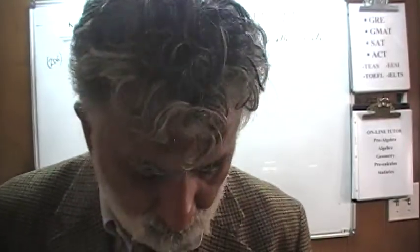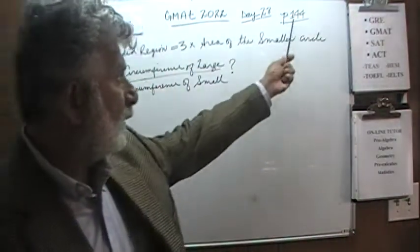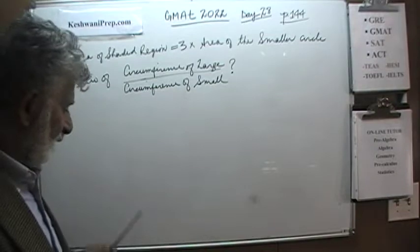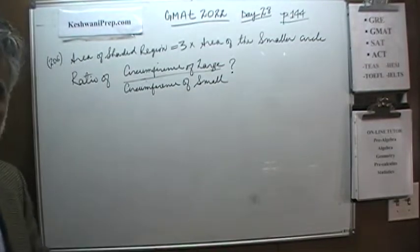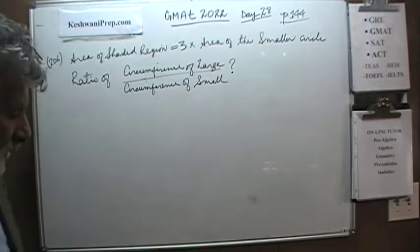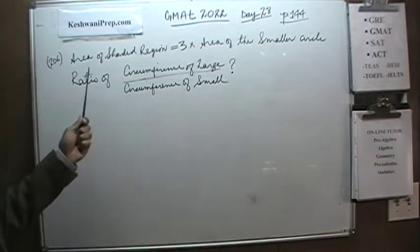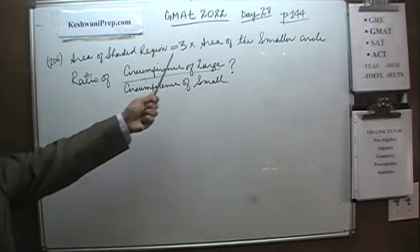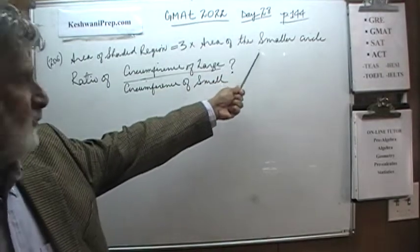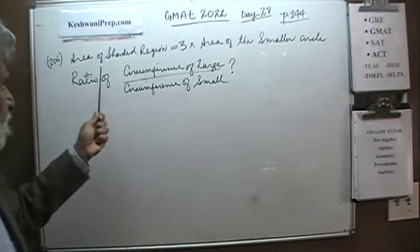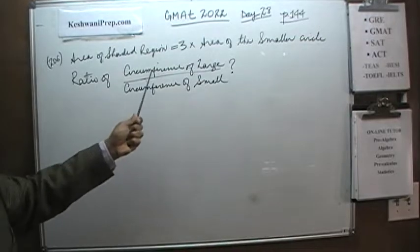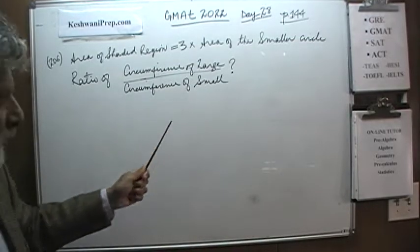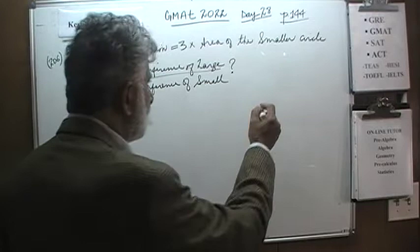Today we'll solve some problems that you'll find on page number 144, beginning with problem 206. As you can see, the problem is already on the blackboard. It's a very straightforward problem. We are told that the area of the shaded region is three times the area of the smaller circle. The question simply is: what's the ratio of the circumference of the large circle to the circumference of the small circle? Let's draw the circles.